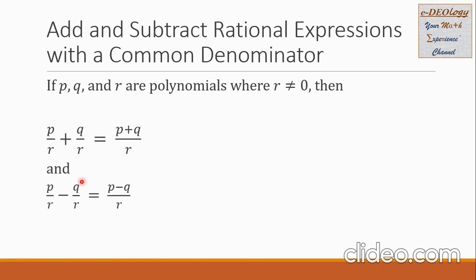Also, when we have P over R minus Q over R, this is equal to the numerator P minus Q, all over the common denominator R.